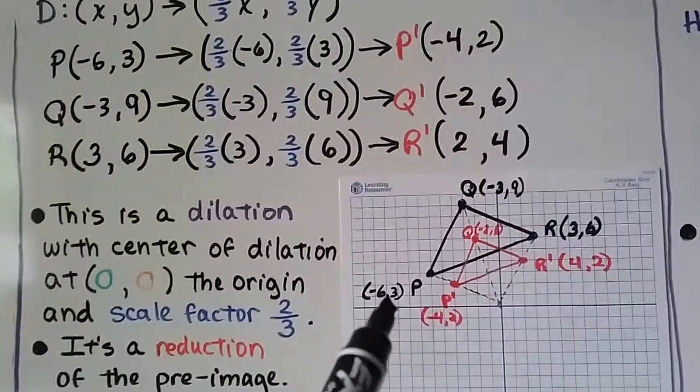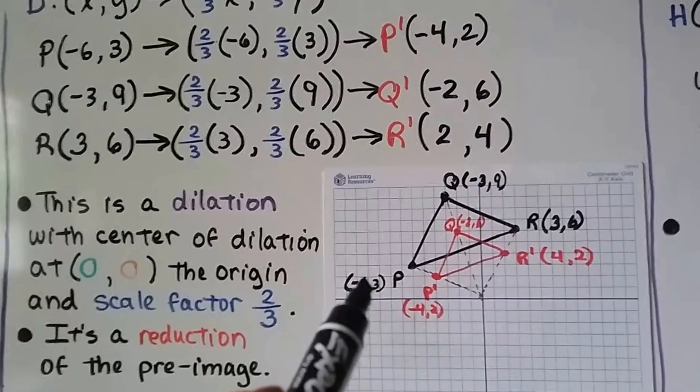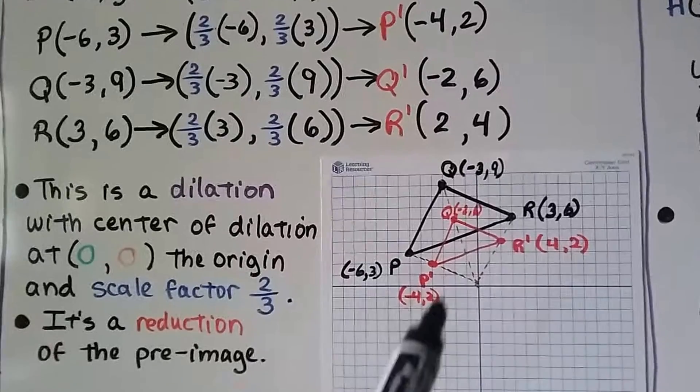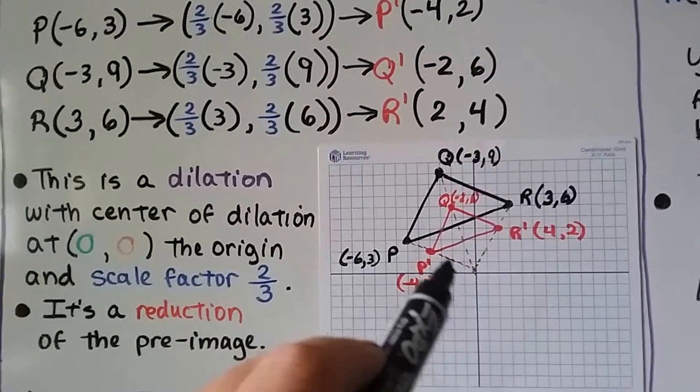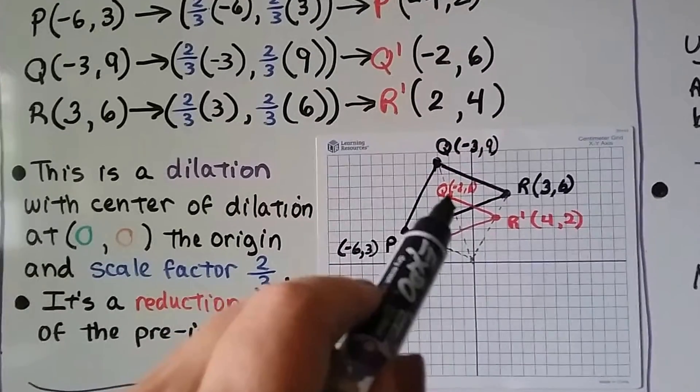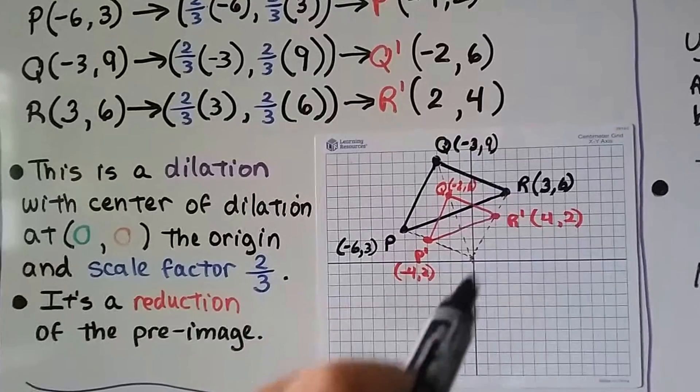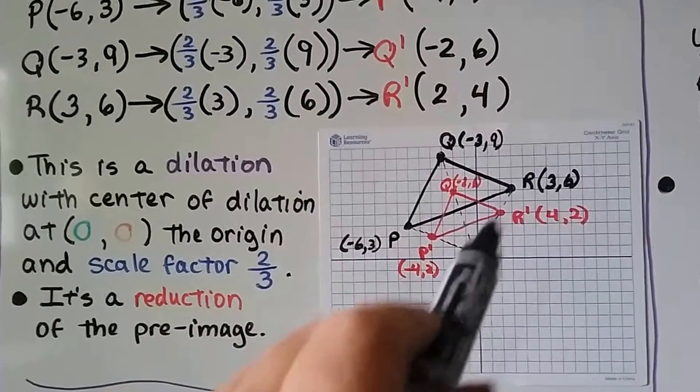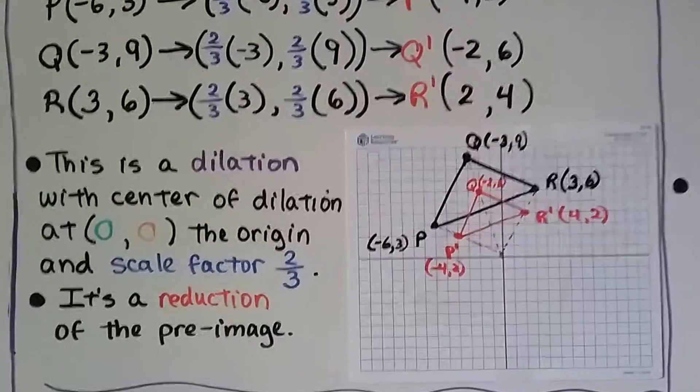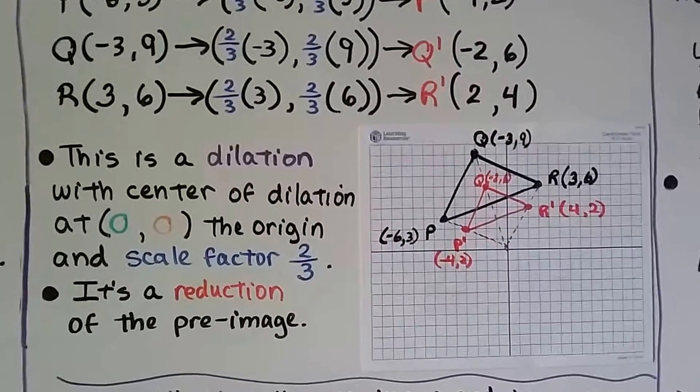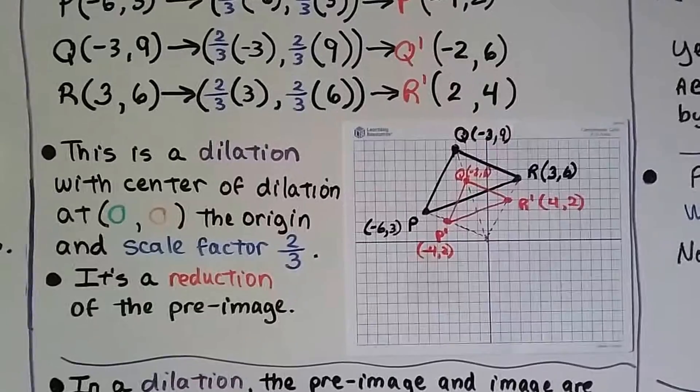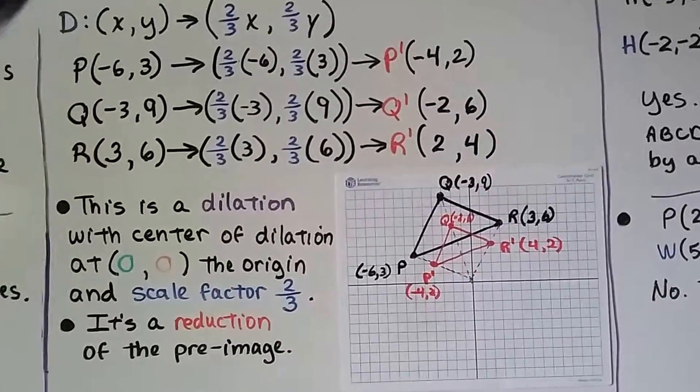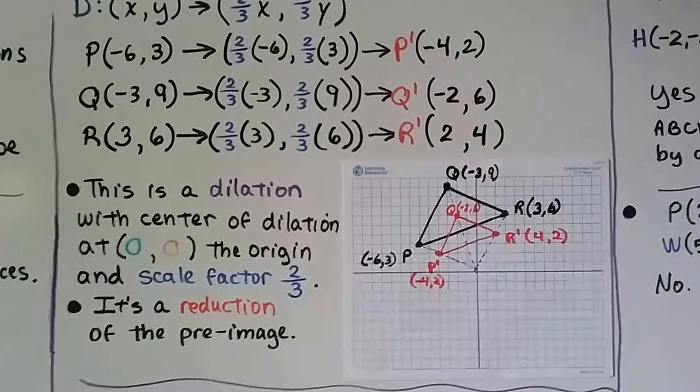And we can graph these ordered pairs. So P, Q, R is the black one and P prime, Q prime, R prime is the littler red one. When we draw lines from the origin through P prime to P and through Q prime to Q and from R prime to R, we see that the vertices go through those rays. So this is a dilation with the center of dilation at (0,0), the origin, and our scale factor is 2/3. That's the value of k. It's a reduction of the preimage.